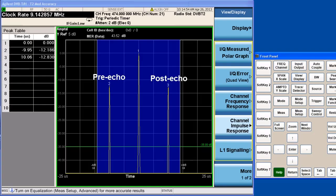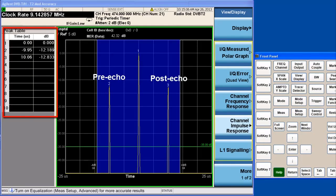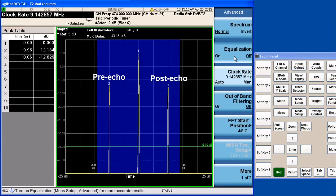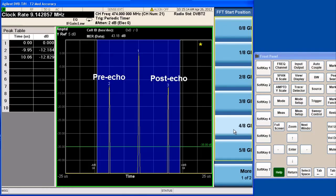Signals from three paths are detected. We can see the channel impulse response trace on the screen and there is also a table with the delay and power level for each path. We can also turn on equalization and optimize the FFT start position to get better results.